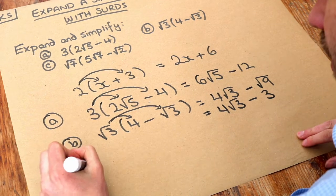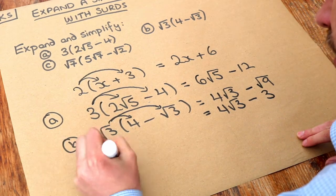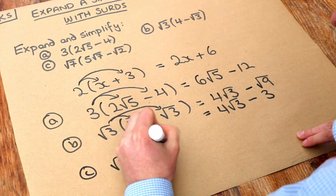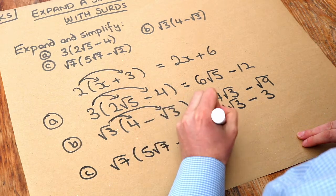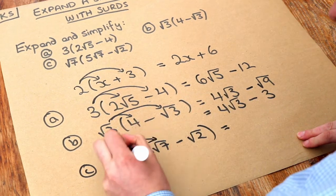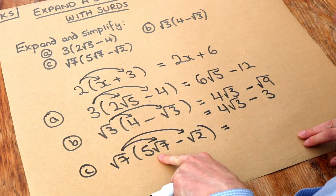Then finally, we've got root 7 times 5 root 7 minus root 2. So the same thing as usual. The root 7 times the 5 root 7.